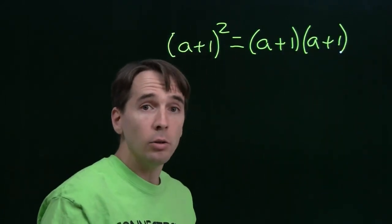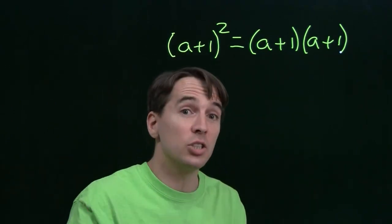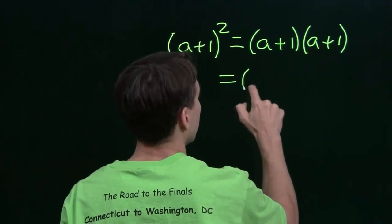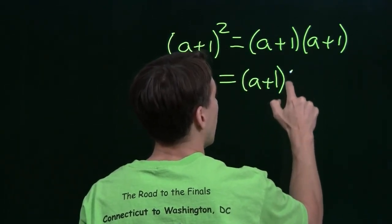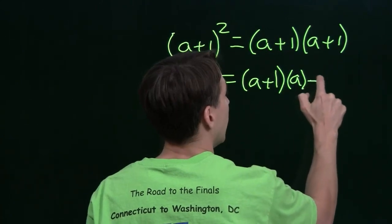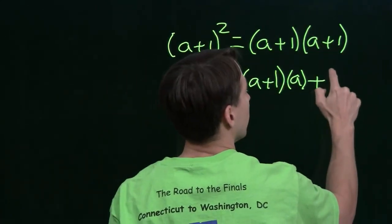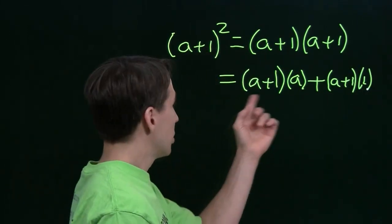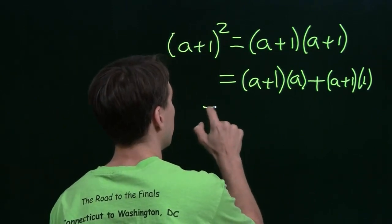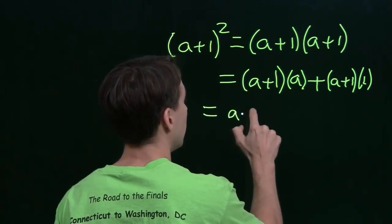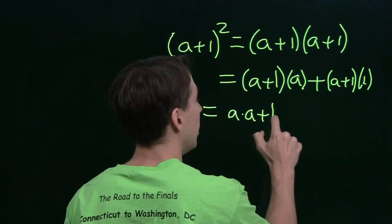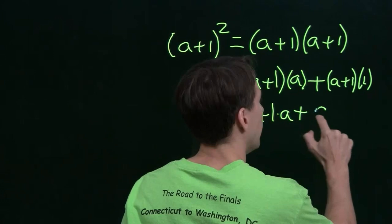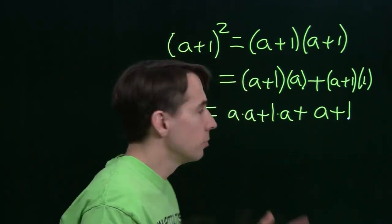Now how do we multiply that out? Well, it's a product here. We can use the distributive property. I'll take this times the first term, a plus 1 times a, and add it to this times the second term, a plus 1 times 1. Of course, a plus 1 times a, we use the distributive property again. We have a times a, plus 1 times a, and then over here, it's just a plus 1 times 1, well, that's just a plus 1. Anything multiplied by 1 is, you just get it back.